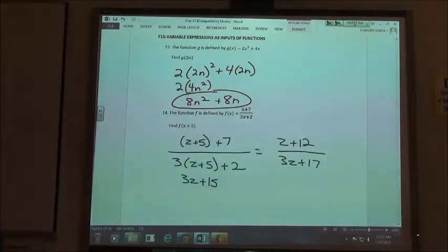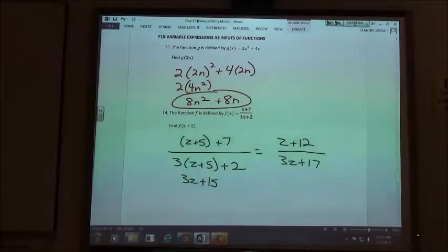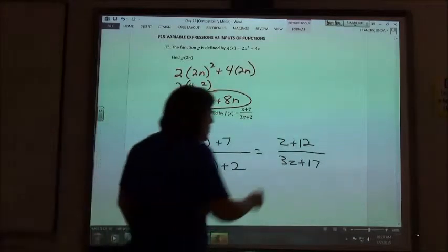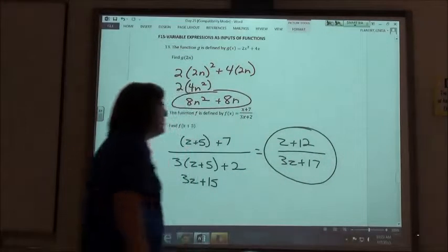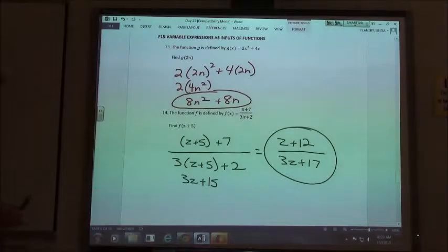I can't simplify that fraction unless I can factor out a common factor. I can't factor either the top or the bottom, and so z plus 12 over 3z plus 17 will just be my answer.